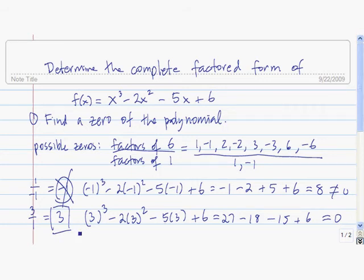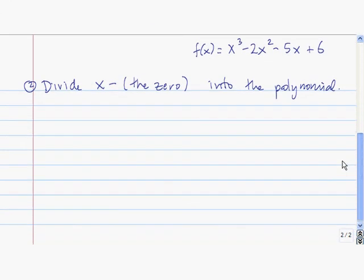So using this information, now we know from the factor theorem that since 3 is a zero, then x minus 3 is a factor. So what we want to do is we want to divide x minus 3 into the polynomial. In general, you divide x minus the zero. Our zero is 3, so we're going to divide x minus 3 into this polynomial.